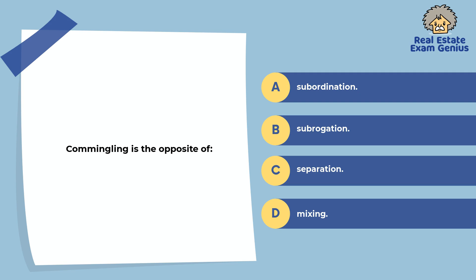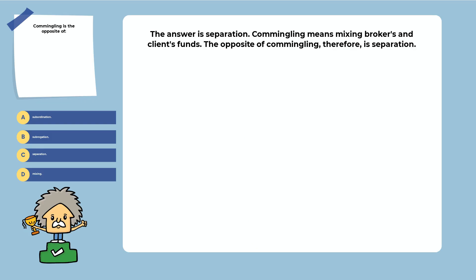Commingling is the opposite of: subordination, subrogation, separation, or mixing. The answer is separation. Commingling means mixing or combining the broker's and client's funds. The opposite of commingling, therefore, is separation. All funds should be kept separate in the trust account, and proper record keeping is essential. Violations can have serious consequences.